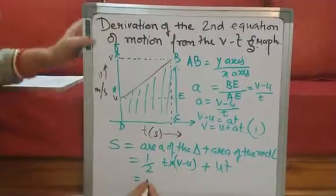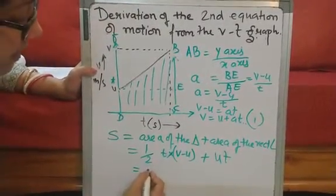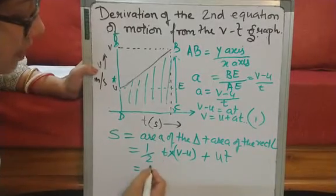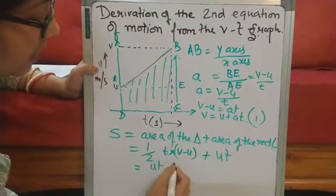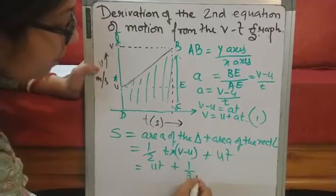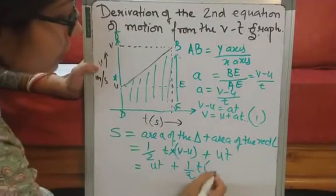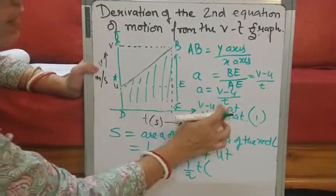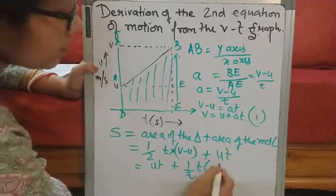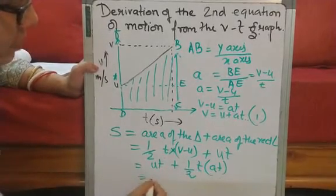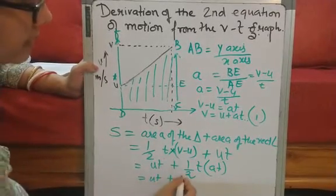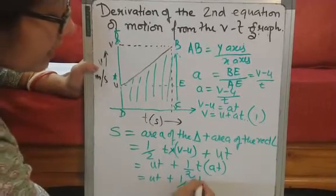Let us see how much it comes to. I will just reverse it rather. So I will write it ut plus half t. And instead of v minus u, I will take it from the first equation.